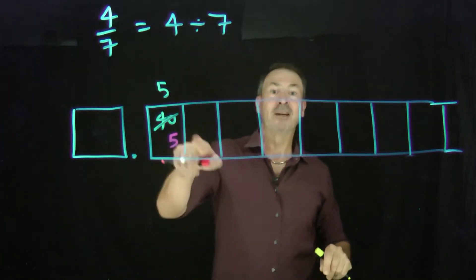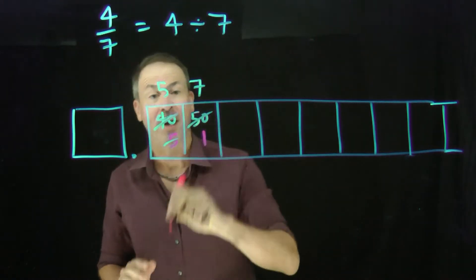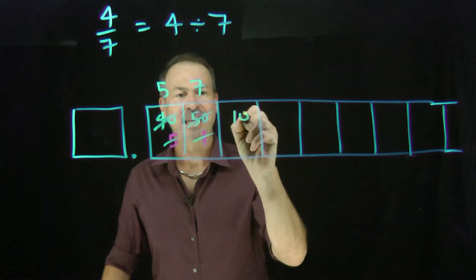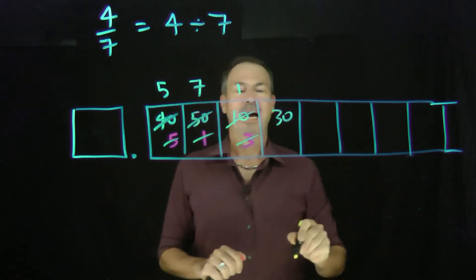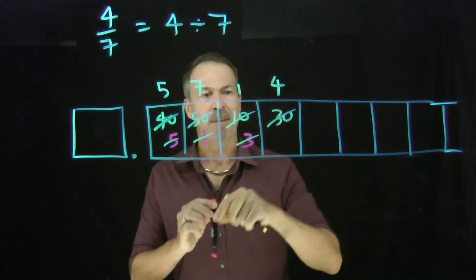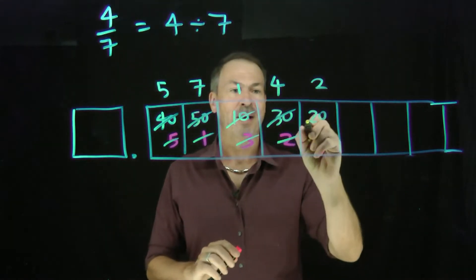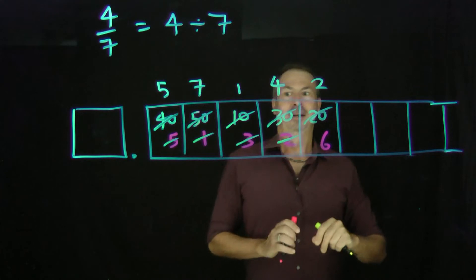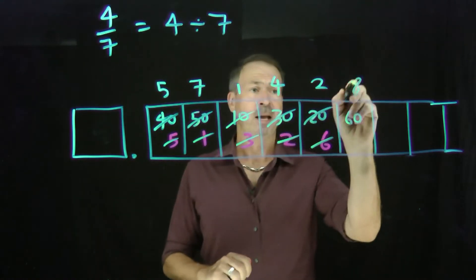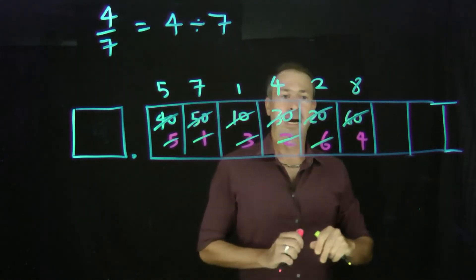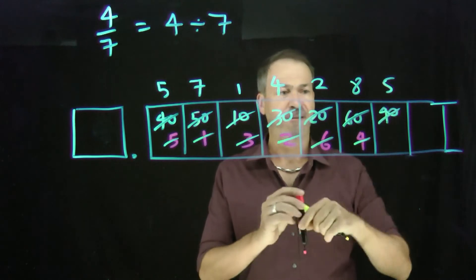We unexplode those five dots to make 50 dots. Now I'm thinking 49 — that's seven groups of seven — but that will leave one dot behind. Unexplode that one dot to make ten. Definitely one group of seven there, but it will leave three dots behind. Unexplode those three to make 30. I'm thinking 28 — that's four groups of seven — but it will leave two behind. Unexplode the two to make 20. I see two groups of seven, which will leave six behind. Unexplode the six to make 60. I'm thinking 56 — that's eight groups of seven — but that would leave four behind.